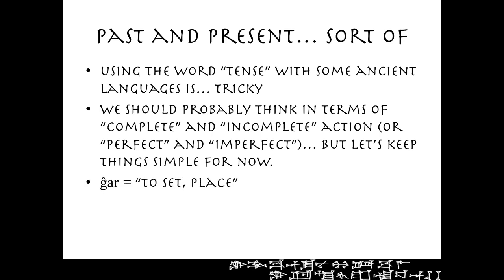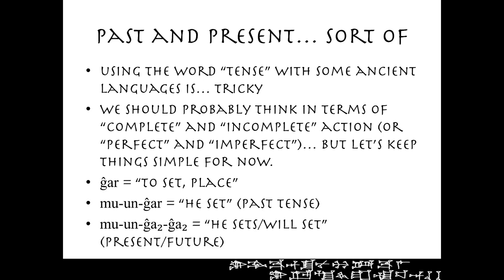The verb nyar means 'to set,' 'to place,' or 'to put.' So if we say mu-un-yar, that means 'he set' — past tense. And mu-un-nya-nya, mu-un-ya-tu-nya-tu — this is the present future: 'he sets' or 'he will set.' It can be either one.